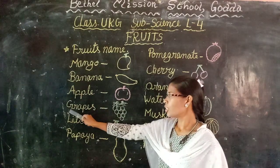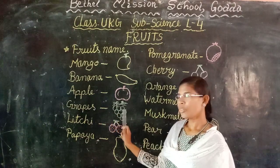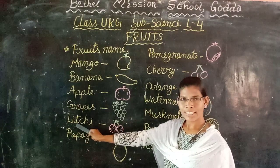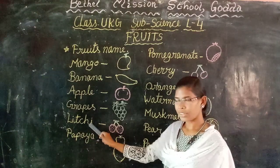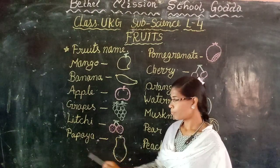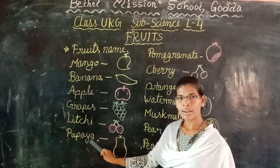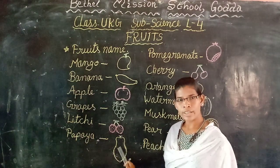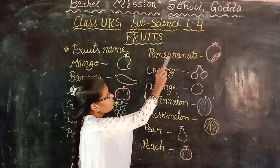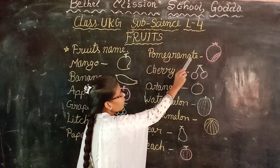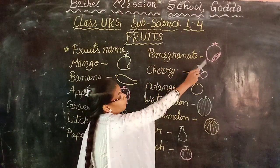Grapes — G-R-A-P-E-S. It is green in color. Litchi — L-I-T-C-H-I. It is red in color. Papaya — P-A-P-A-Y-A. It is green and yellow in color. Pomegranate — P-O-M-E-G-R-A-N-A-T-E. It is red in color.